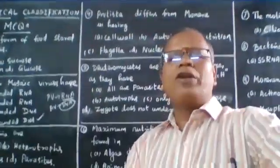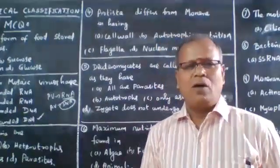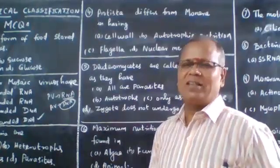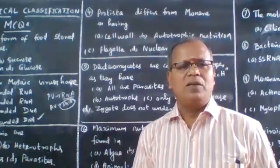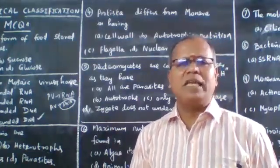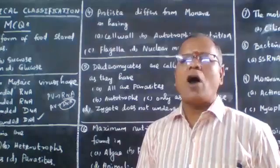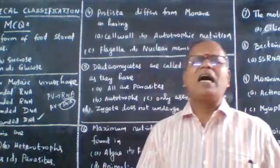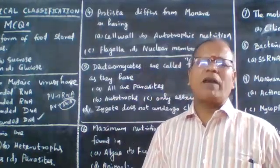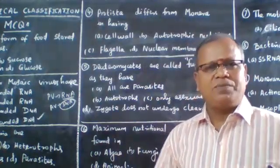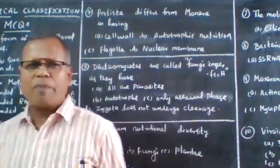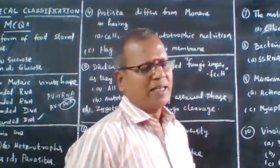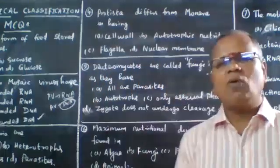Next question: Protista differs from Monera in having which of the following? Option A: autotrophic mode of nutrition. Option B: flagella. Option C: nuclear membrane. Option D: autotrophic nutrition. The options repeated are flagella and nuclear membrane.